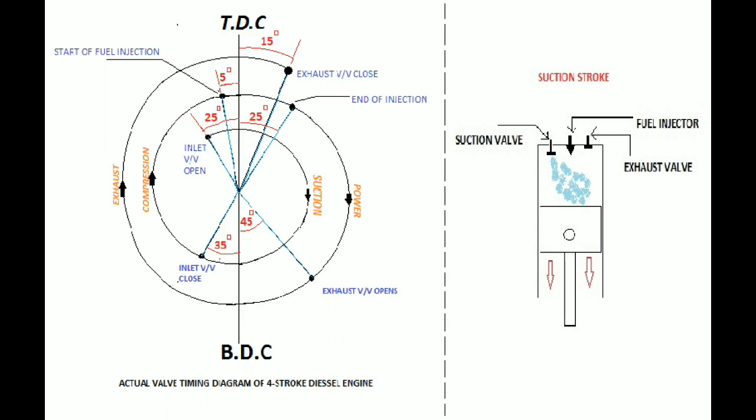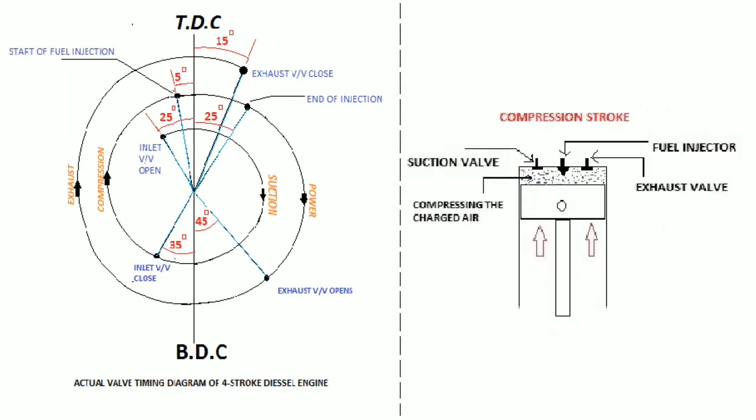Compression stroke: In compression stroke, both inlet and exhaust valves close and piston is traveling from bottom dead center to top dead center. Once the piston reaches about 5 degrees before top dead center, fuel injection commences. This angle also may depend on the manufacturer.